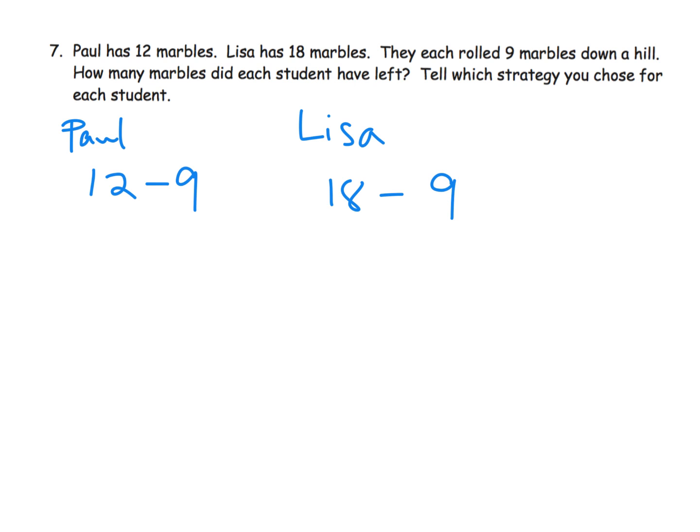For Paul, I'm probably going to do the count on method. So I'm going to say 9, and I'm going to say 10, 11, 12. Okay, I've got three fingers held up in the air, so that means 12 minus 9 is 3.